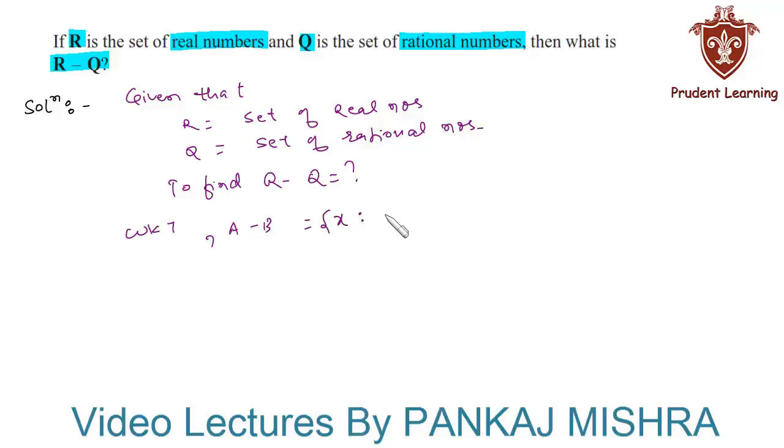So keeping this concept in mind, let us try to solve this question. Well, we also know that the set of real numbers is equal to the set of rational numbers union the set of irrational numbers.